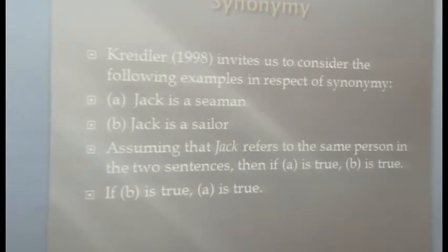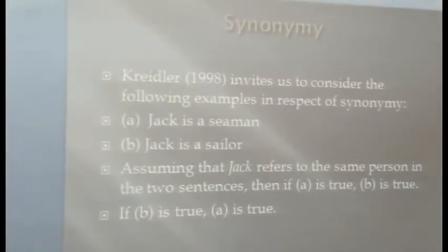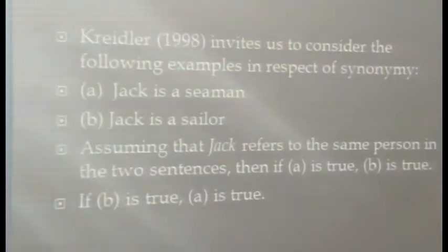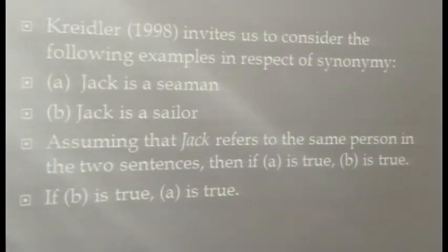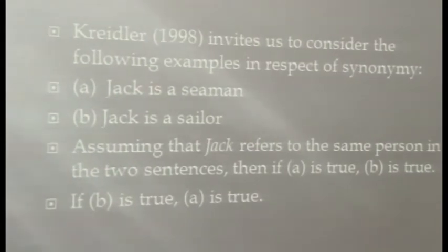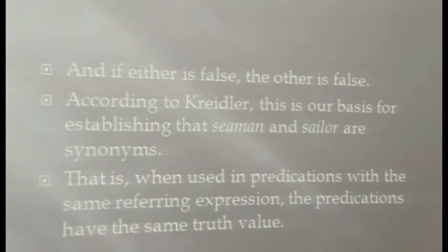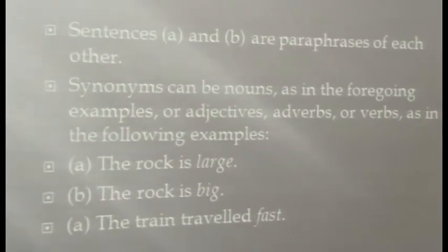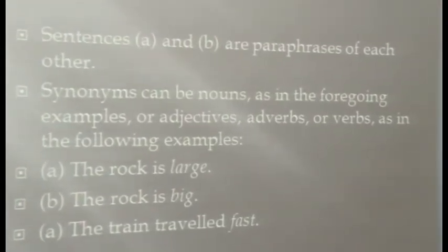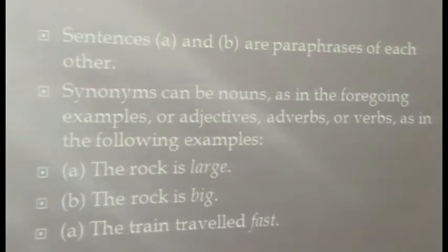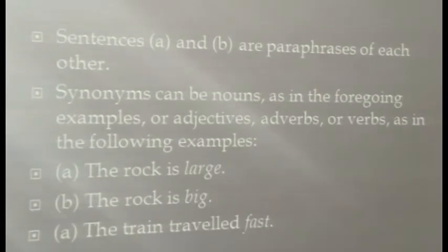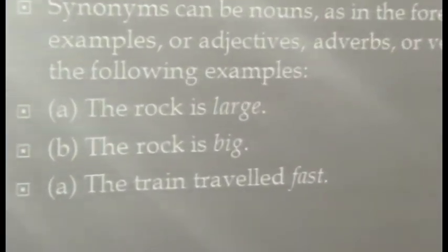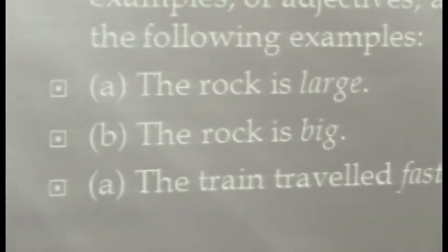Consider the following pair of sentences in relation to synonymy. Sentence A: 'Jack is a seaman.' Sentence B: 'Jack is a sailor.' In sentences A and B, we can assume that 'seaman' and 'sailor' are synonyms. Synonyms can be nouns, as in these examples, or they can be adjectives, as in: 'The rock is large' means the same thing as 'the rock is big.' In this pair of sentences, 'large' and 'big' are synonymous but function as adjectives.